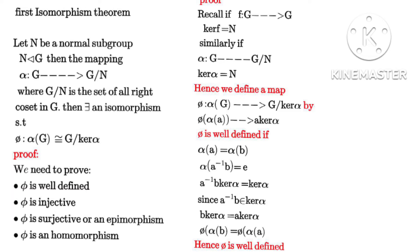φ is well-defined if and only if α(a) equals α(b), and when you take a⁻¹b you are left with an identity element. Going back to the definition, φ(a) equals a·ker(α). Applying this, we have a⁻¹b·ker(α) equals ker(α). Since a⁻¹b is a member of ker(α), this means b·ker(α) equals a·ker(α). Thus φ is well-defined.